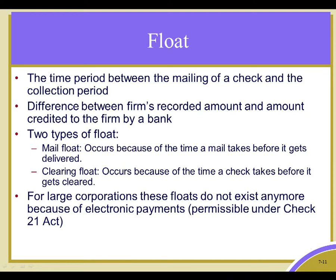As a general rule, firms want to collect their money as fast as they can and pay their cash out as slowly as they can. They'd like to increase the float on their own payments because the money can be sitting in the bank in an account that earns interest until the check is presented. So they'd like to slow pay.